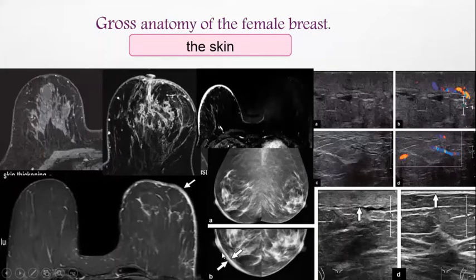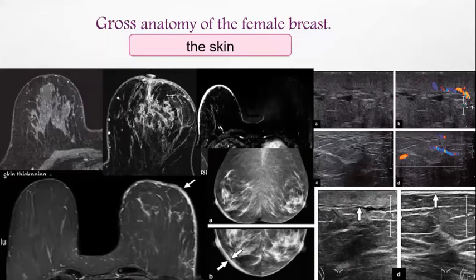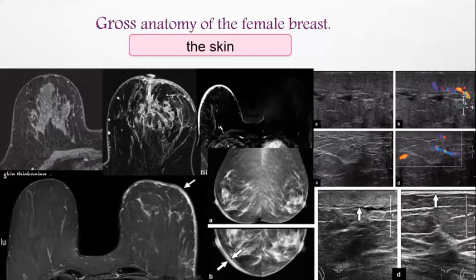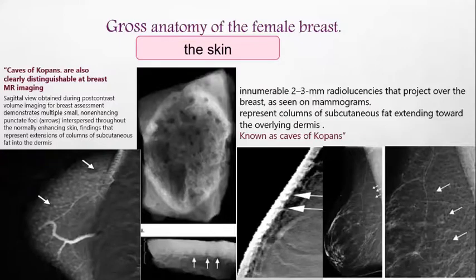On ultrasound, abnormal skin thickening includes loss of normal anatomic morphology — one cannot appreciate the distinct epidermal and dermal echogenic line from the hypodermal subcutaneous fat, representing lack of tissue differentiation. This is associated with underlying subcutaneous lymphatic dilatation and increased vascularity. This is clearly pathological and not normal anatomy.